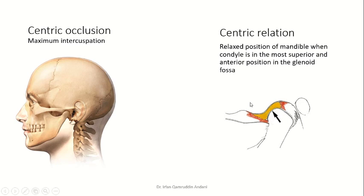This is the centric relation position. For example, if you are sitting in a very relaxed mode with your teeth not in contact, that position of the jaw is actually centric relation — when all your muscles are very relaxed and the condyle is in the most superior and anterior position in the fossa. If the patient does not have any teeth — an edentulous patient — they will definitely have disturbed centric occlusion, but their centric relation will not be disturbed because centric relation does not depend on the teeth.